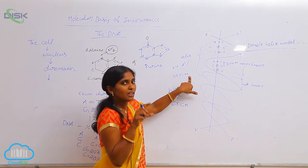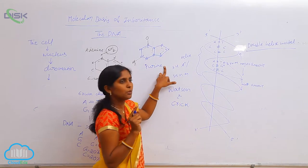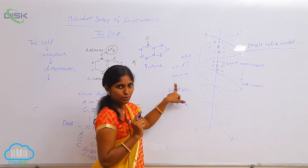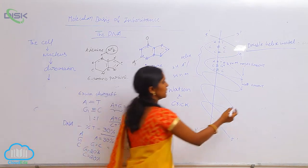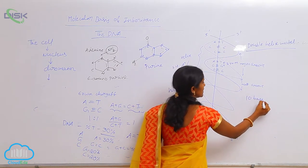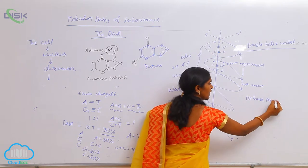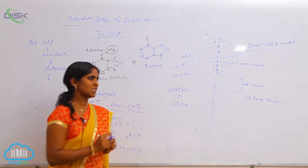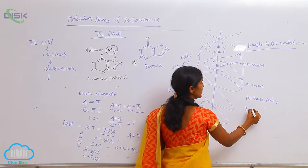The length of one helix is equal to 3.4 angstroms, or 34 nanometers. In each helix, approximately 10 base pairs are present. When expressing the length of the DNA, we state it in the form of base pairs.